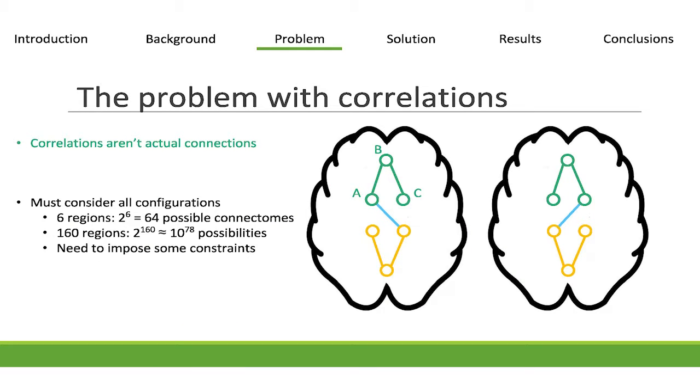So, if we look first just at these green points, imagine we have a brain that only has three areas, A, B, and C. And they're all correlated with each other. We might think there's connections between all three of the regions A, B, and C. But if we look at B, and then look at A and C, we can find that A and C are conditionally independent given B.